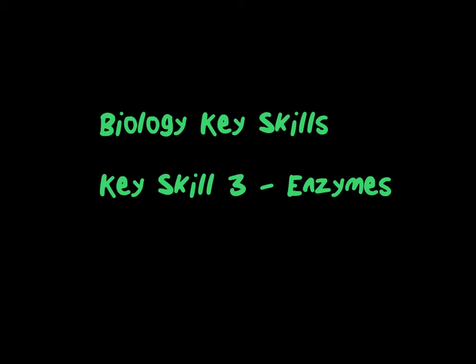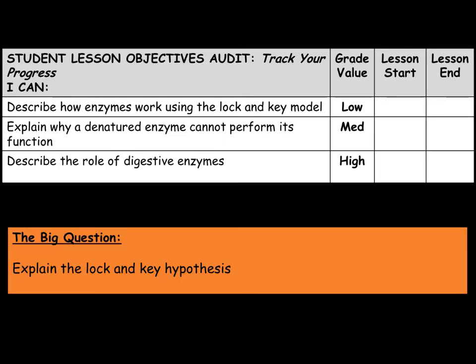This is the third video in the Biology Key Skills Tutorial video series. In this video, we will be looking at enzymes. We will describe how enzymes work using the lock and key model, look at why a denatured enzyme cannot perform its function correctly, and look at the role of digestive enzymes. Our big question today is to explain the lock and key hypothesis.